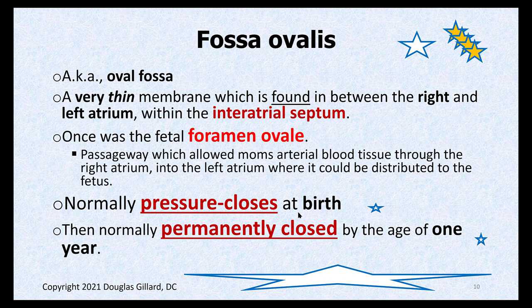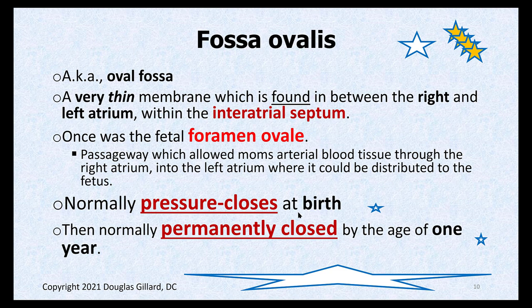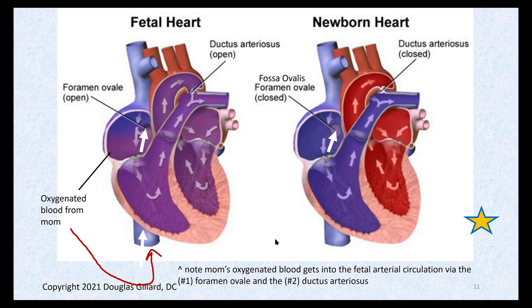Let's talk about the fossa ovalis and foramen ovale - a very thin membrane found between the right and left atrium within the interatrial septum. It was once the foramen ovale, an open valve where blood could pass through. Mom's arterial blood was shot through there into the left atrium because the fetus's lungs don't work - we get oxygenated blood from mom. Once you're born, the fossa ovalis valve shuts. By the age of one, this valve is permanently closed.